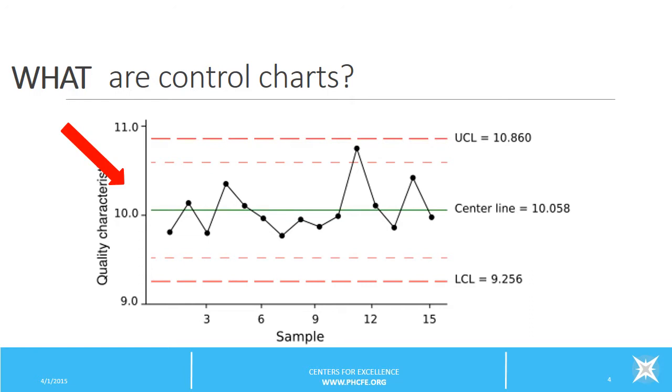The y-axis depicts some quality characteristic, which could be timeliness or errors, for instance. You can see that the data points appear random. The green line indicates the center, which is typically calculated, again, based on the mean or average of observed data points.